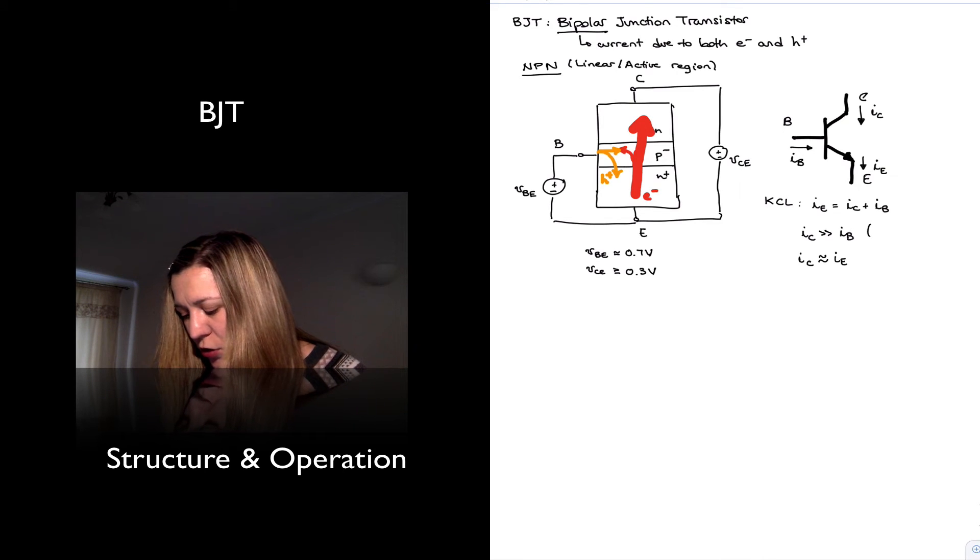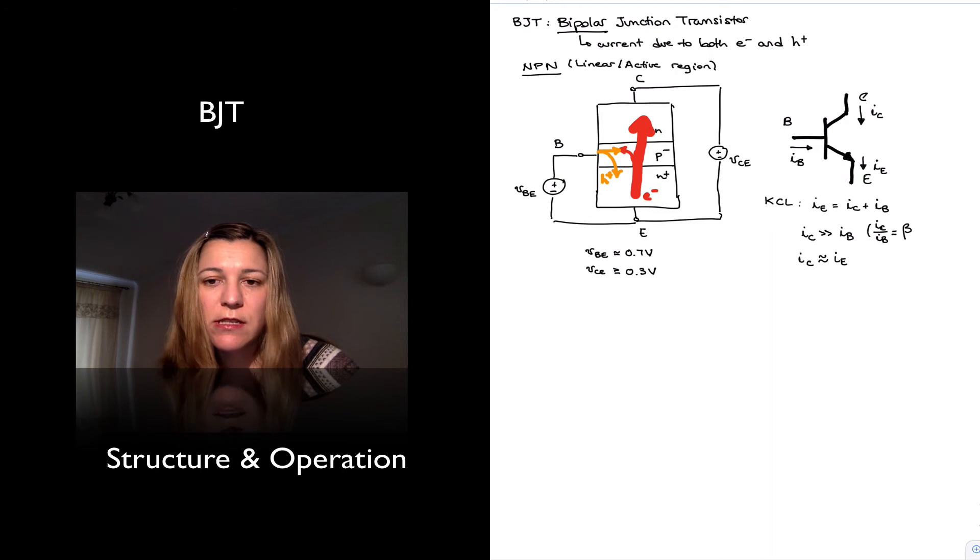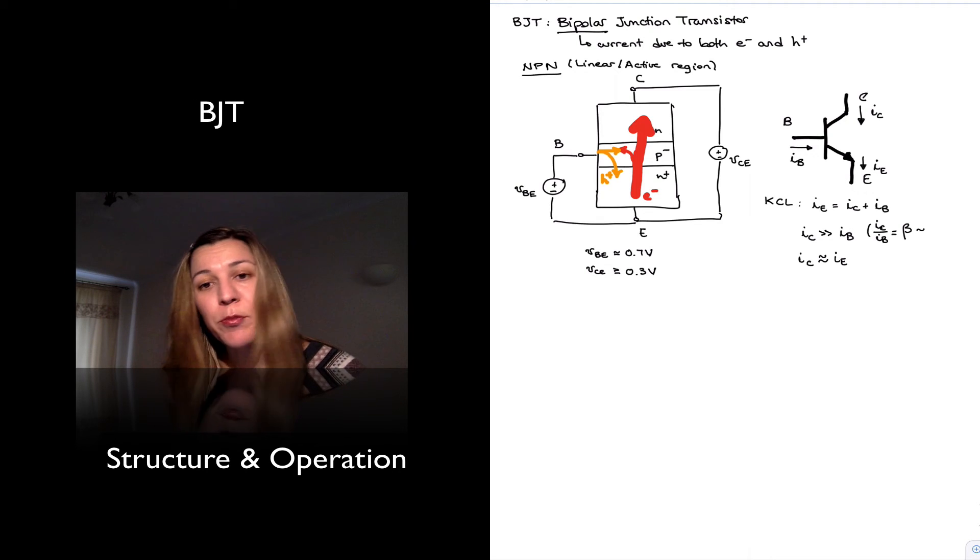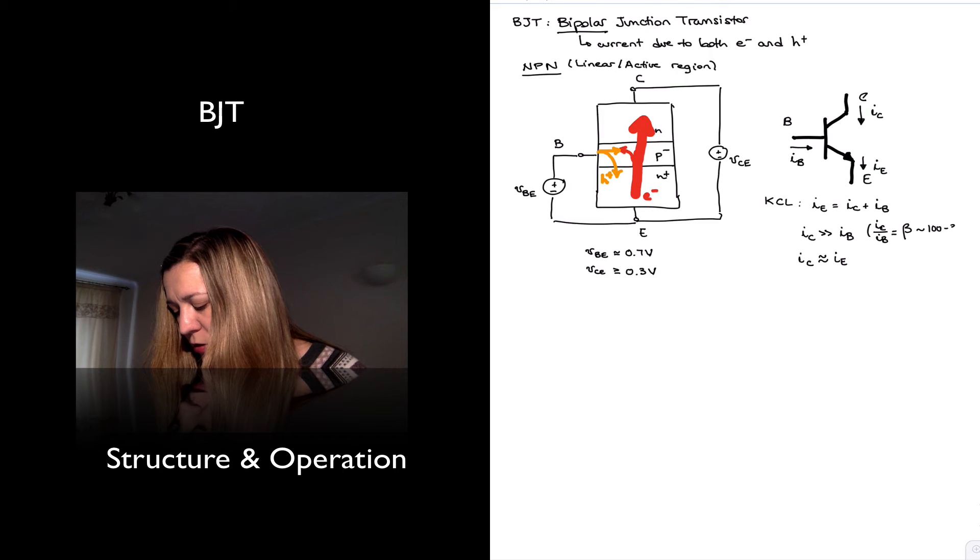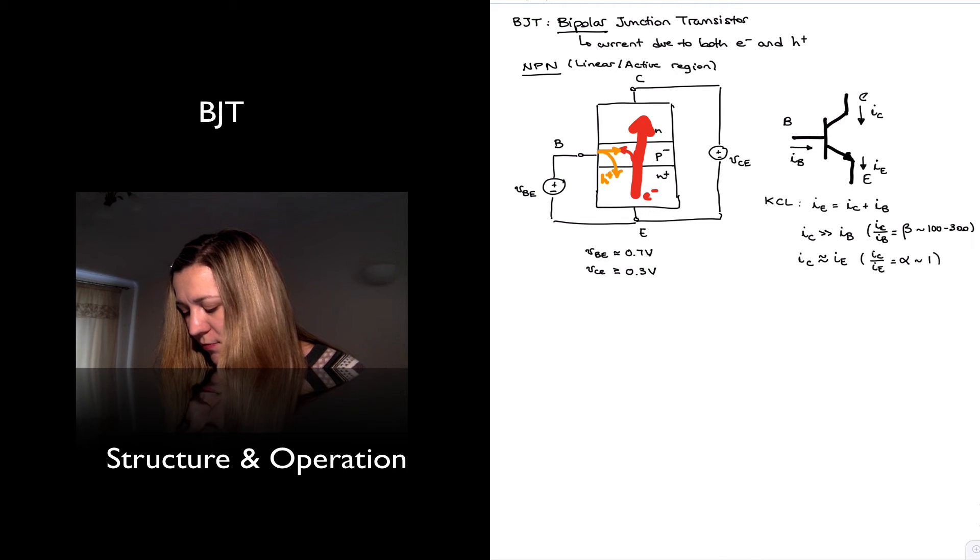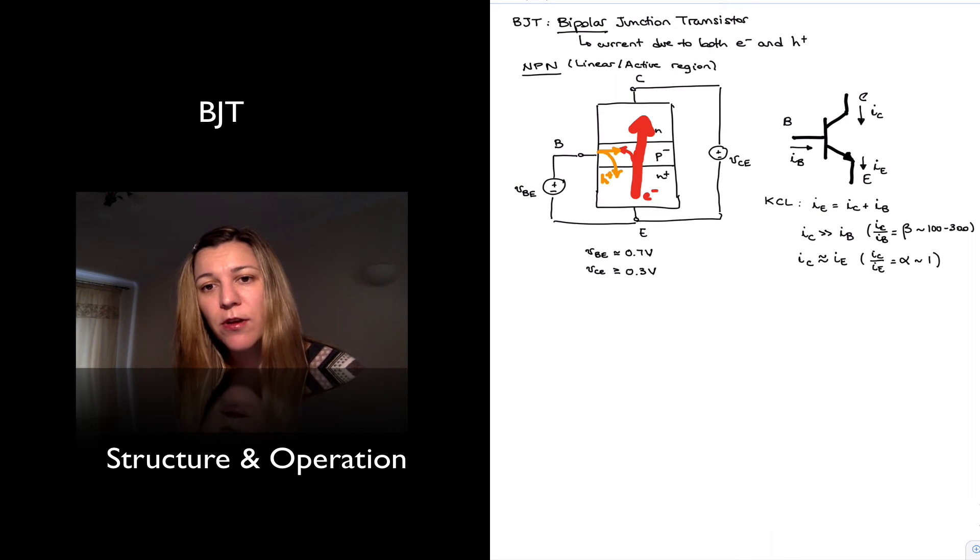And in fact, the ratio of collector current to base current receives a name. It's the name of beta, which is termed the current gain. We'll see why in a second. And for a typical small signal transistor, it's in the range of 100 to 300, normally. And then the ratio of the collector to the emitter current also receives a special name, and that's alpha. And that's typically approximately equal to 1, again, because the emitter and collector current are approximately equal to each other.